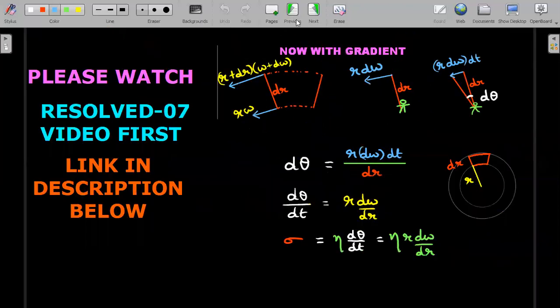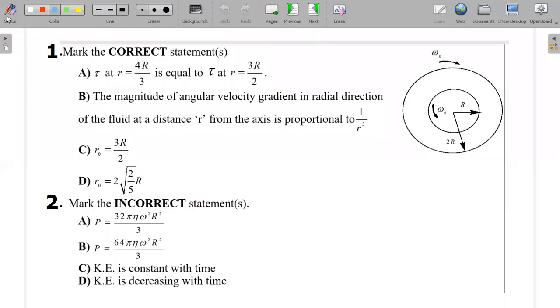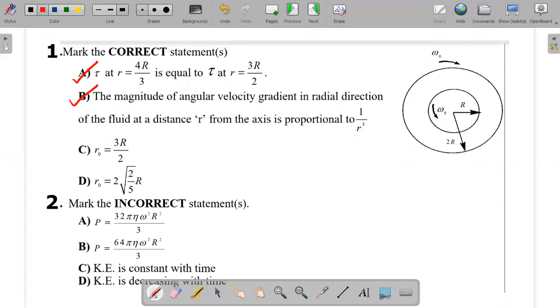So let's go back and mark the options for ourselves now. So in the first question I think we realized because it's correct statements that he's asking, the first one torque is equal at 4r/3 and 3r/2 or for that matter anything in between R and 2R, it's equal. Magnitude of angular velocity gradient I think we found definitely as proportional to 1/r³ that is also a correct answer and I think the d option was the correct answer. So first one answer is A, B, D.